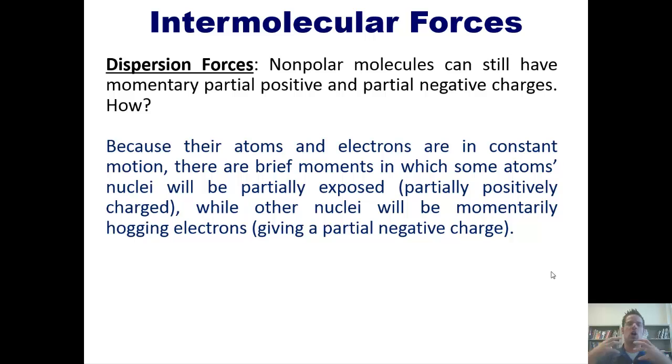Because their atoms and electrons are constantly moving, you might imagine that there would be brief moments in which some of the atoms' nuclei will be partially exposed, which would expose for just a moment the partial positive charge from the protons in that nucleus, while other nuclei will have brief moments when all of the electrons are all over them, giving them partial negative charges.